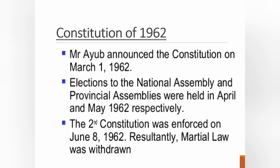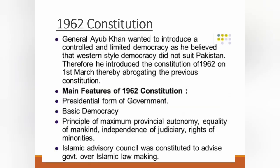In this constitutional reform, Ayoub Khan announced the constitution on 1st March 1962. After that, elections to the national and provincial assemblies were held in April and May 1962 respectively. The second constitution came into force on 8th June 1962, after which martial law was lifted from the country. General Ayoub Khan wanted to introduce a controlled and limited democracy, as he believed that Western-style democracy did not suit Pakistan.